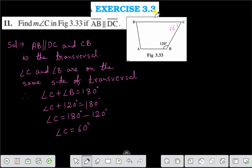Because we know that if AB is parallel to DC and CB is the transversal, then angle B and angle C are on the same side of the transversal. Since angle C and angle B are on the same side of the transversal, therefore they are supplementary. That is, angle B plus angle C will be 180 degrees.